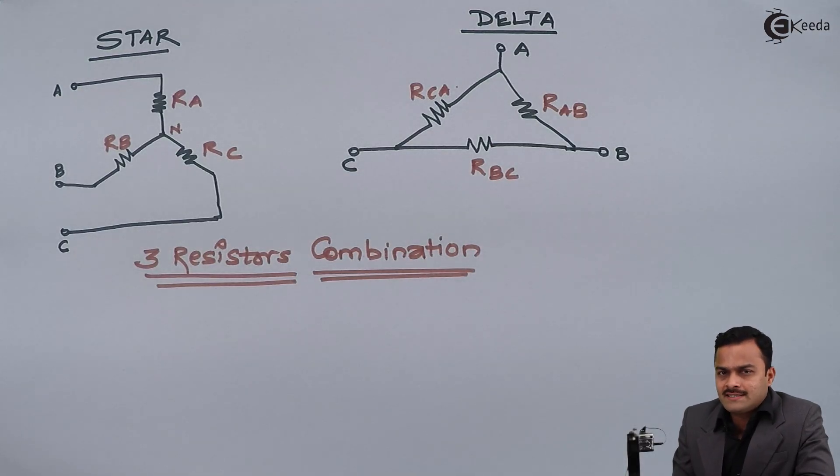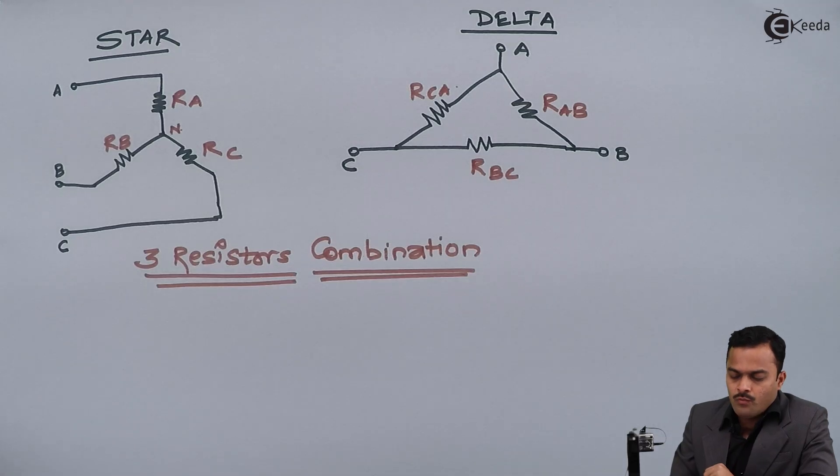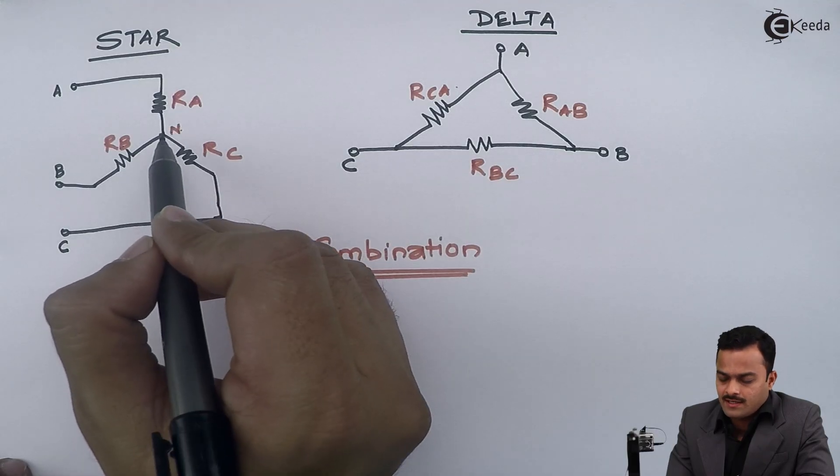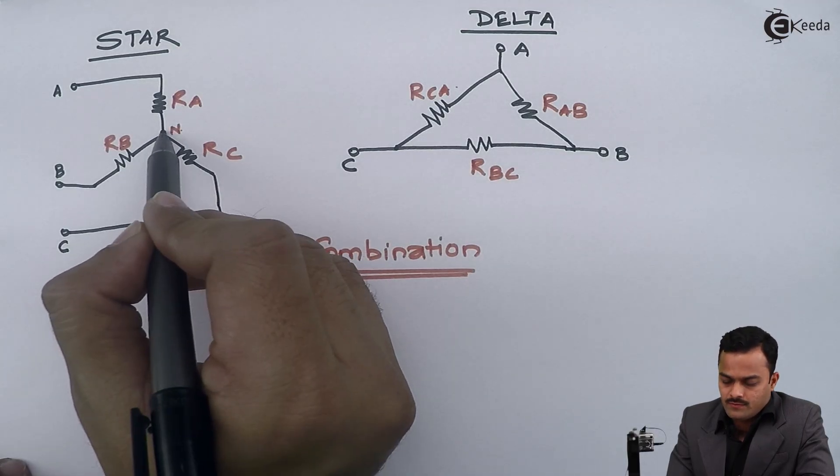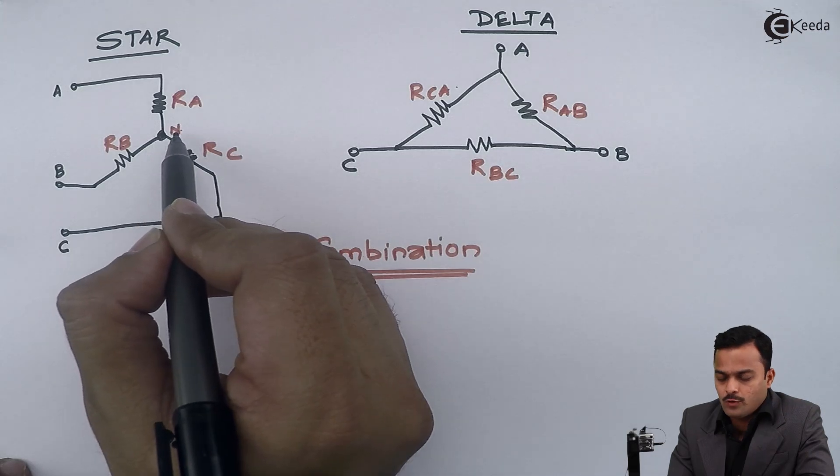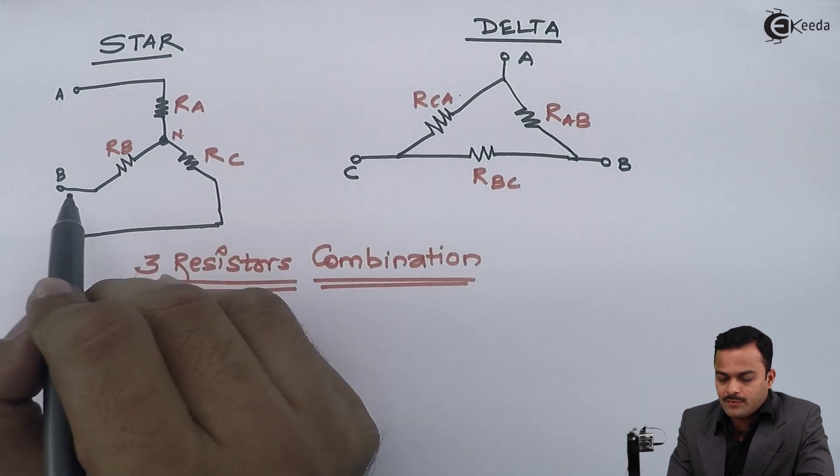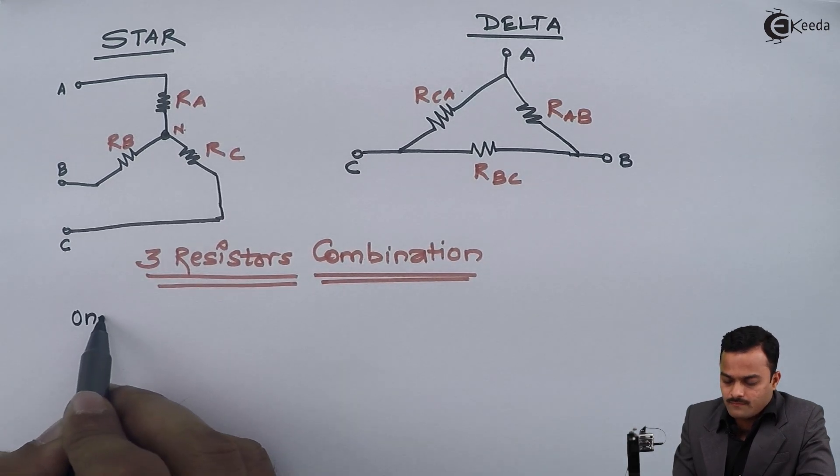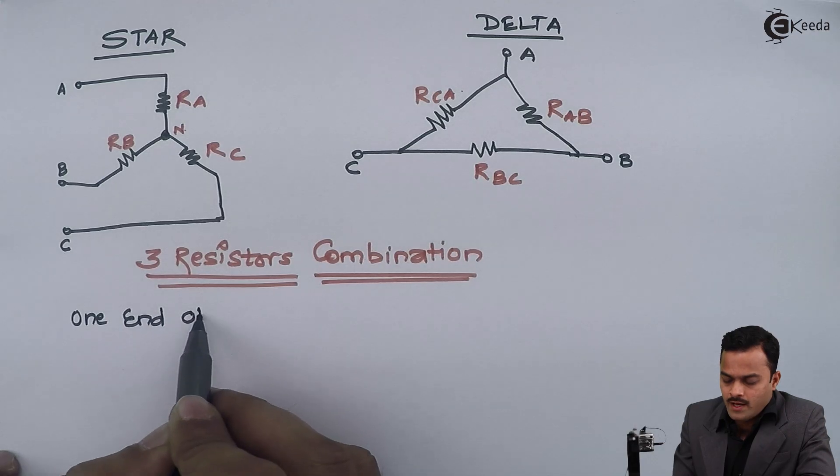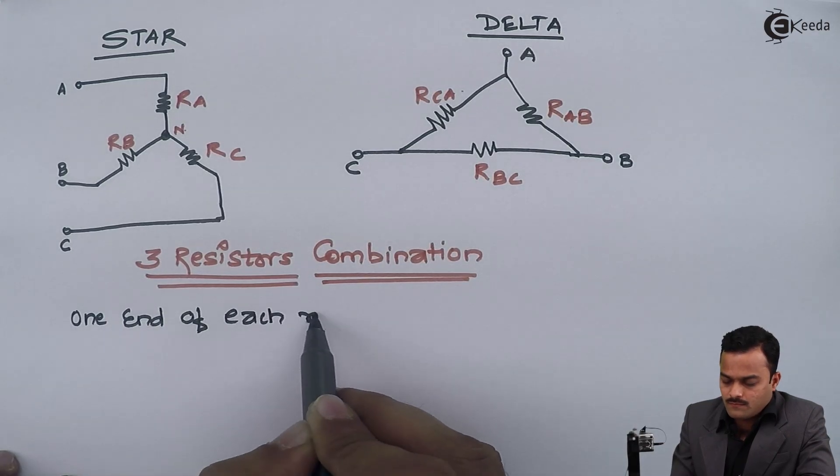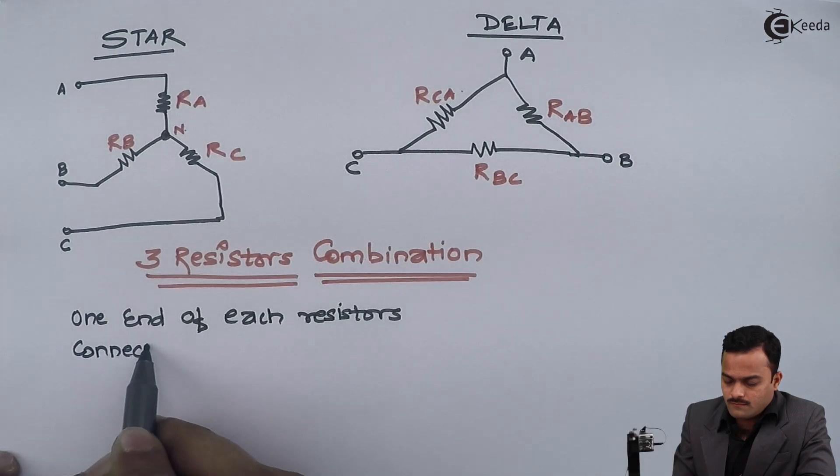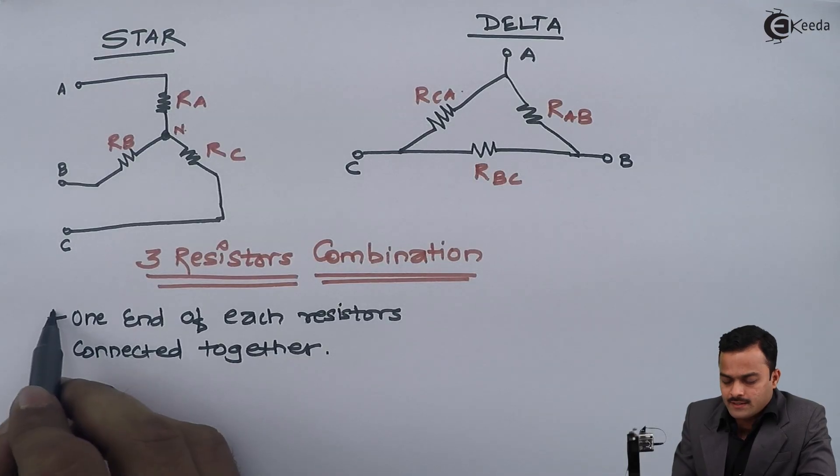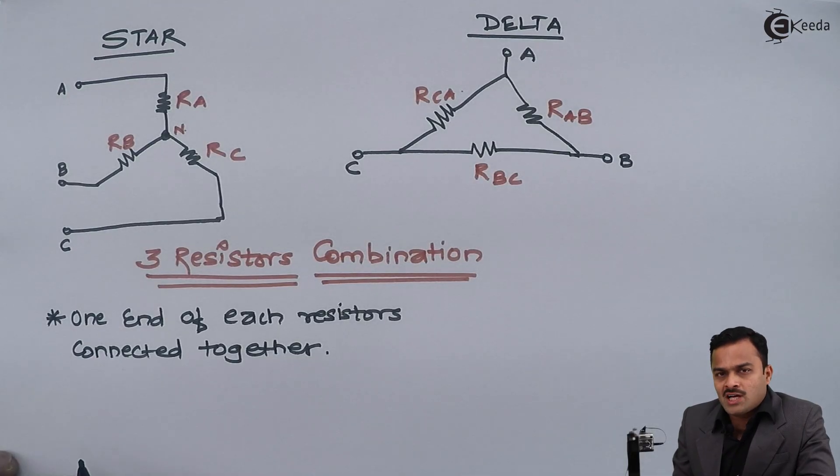So how is star distinguished from delta? Whenever you are having one end of each resistor connected together forming one more junction or one more point, that particular connection is called a star. I can say one end of each resistors connected together, that particular topology I will call as a star.